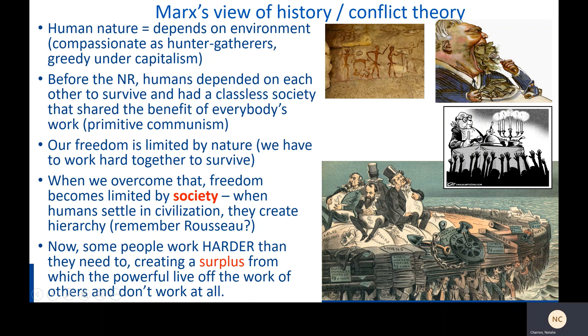Before the Neolithic Revolution — before people developed agriculture way back around 10,000 BCE — humans depended on each other to survive and had a classless, egalitarian society that shared the benefit of everyone's work. Marx called this primitive communism.